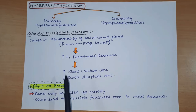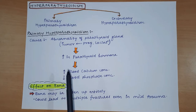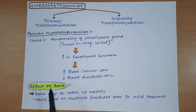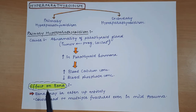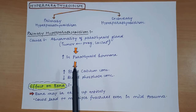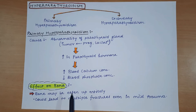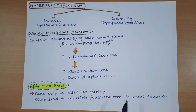Now we will see the effects of primary hyperparathyroidism. First, the effect on bone: since parathyroid hormone is increased, bone resorption will increase greatly, and the osteoclastic activity of bone will increase a lot. Due to this, the bone may be eaten up entirely, and this can lead to multiple fractures even in mild trauma - even a small injury can cause multiple fractures.